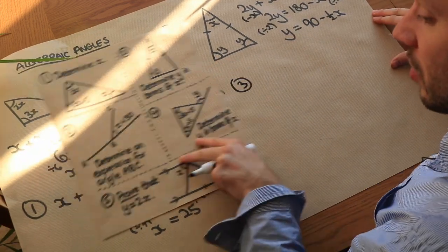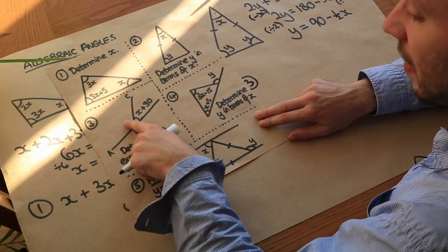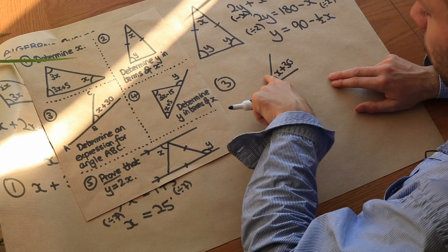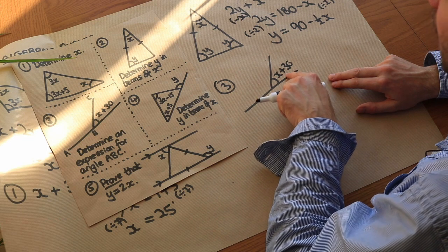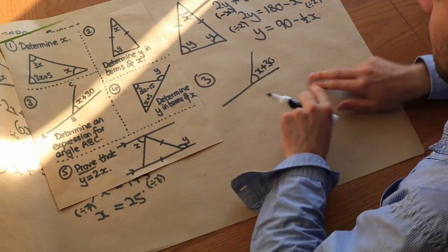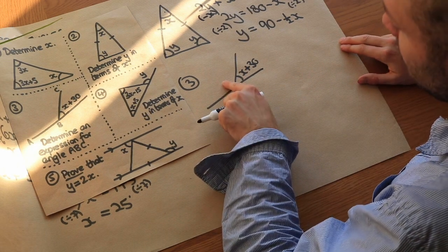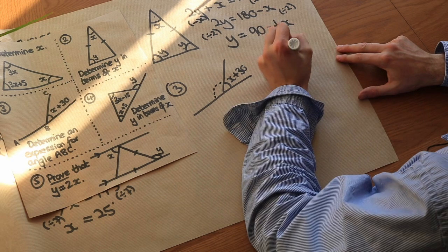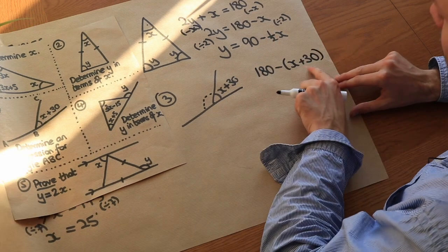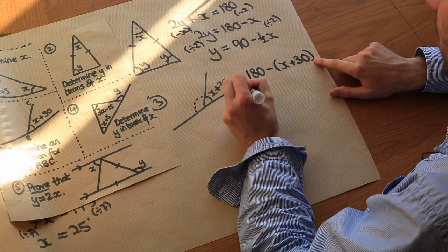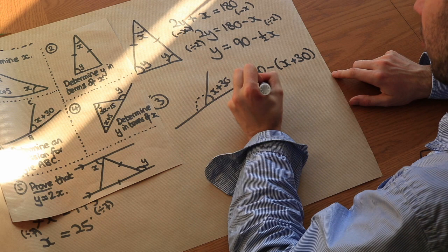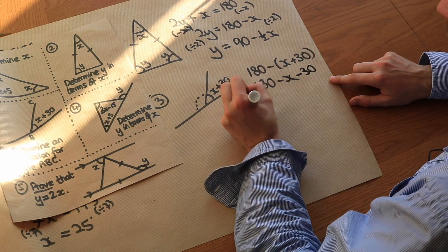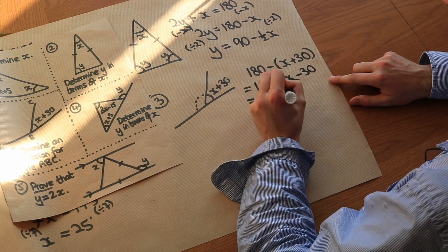What about finding an expression for angle ABC? We know that angle is 180 minus the other angle on the straight line. So this angle is 180 minus (x plus 30) — notice the use of brackets, because we're subtracting all of x plus 30. That gives us 180 minus x minus 30, which simplifies to 150 minus x.